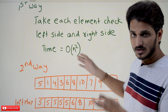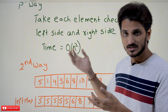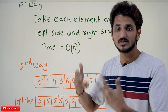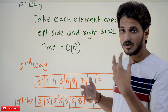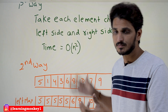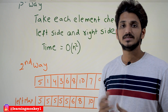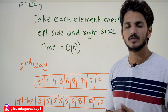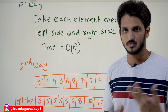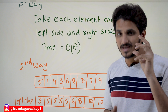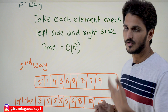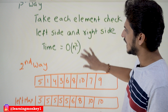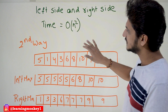Why is it O(n²)? This is basic understanding. Many similar examples we have done in our basic placement training for service based companies course. This is basic coding level — our assumption is you already have that understanding.